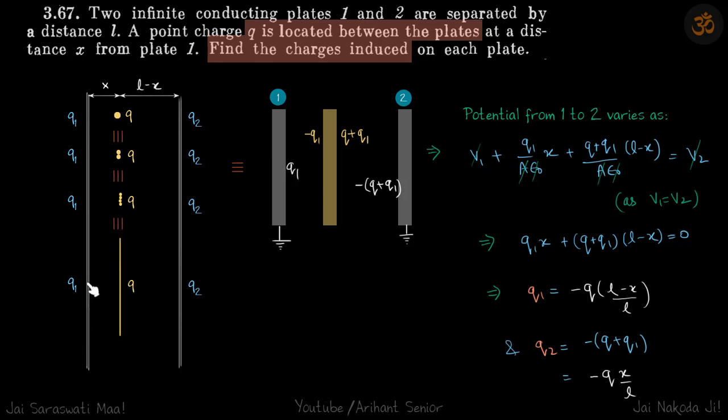And here also we are not talking about the charge distribution on these plates. That is obviously different in all the cases. We are talking about total charge. So total charge depends only on how far this charge Q is placed. And in all the cases the charge Q is placed at the same distance x. So Q1 in all the cases is same.